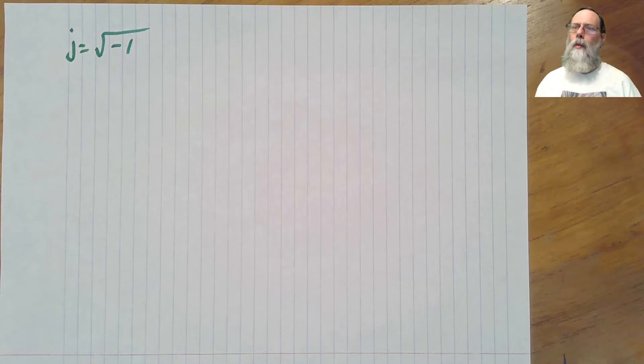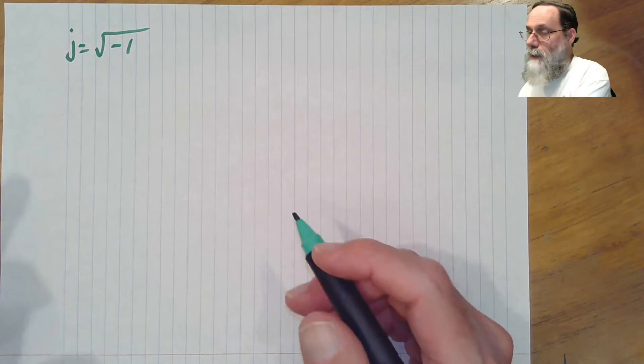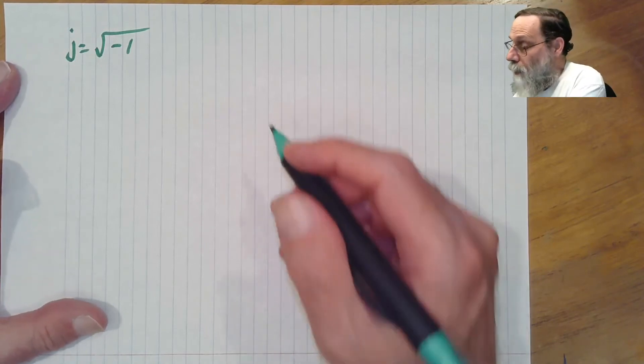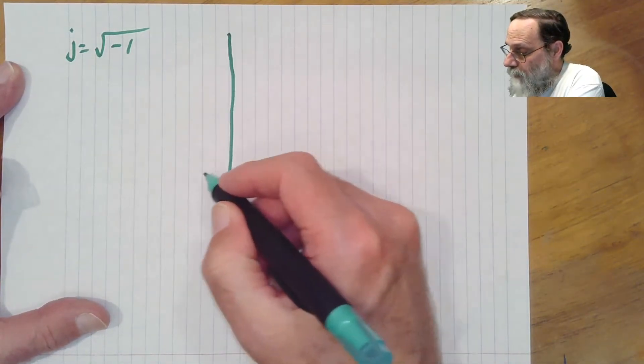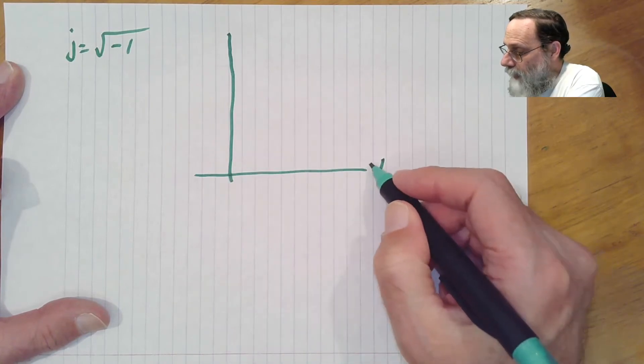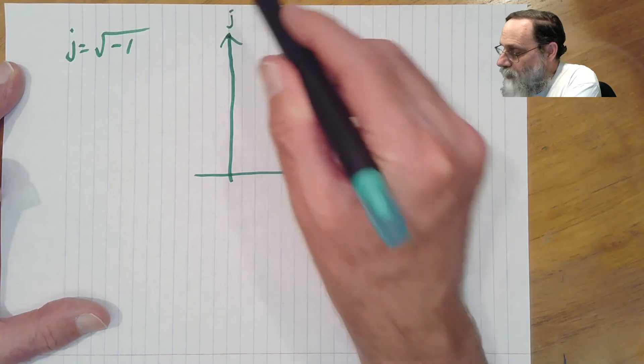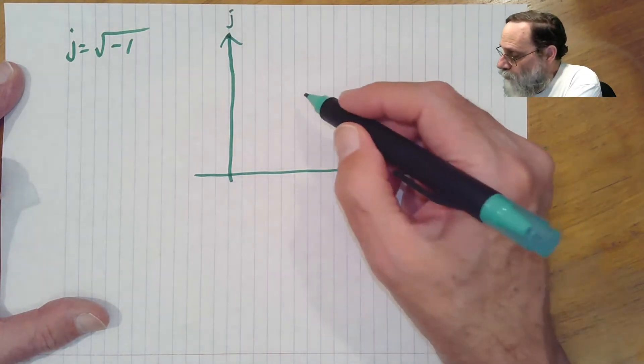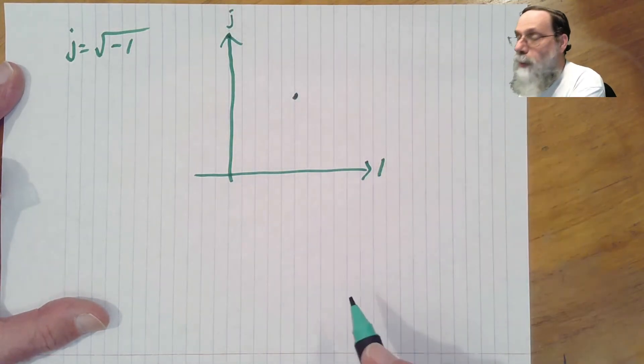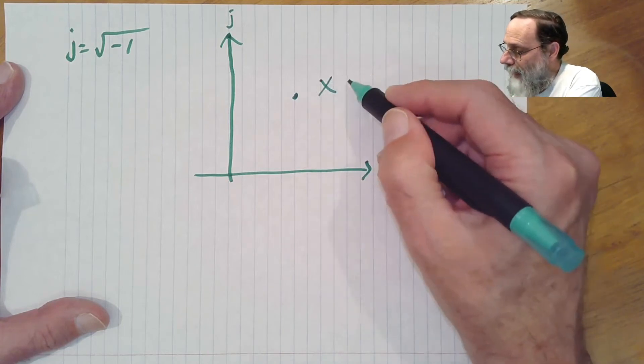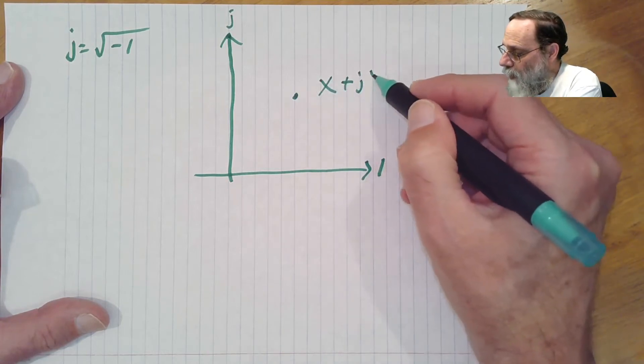What do we do when we do complex numbers? The first thing is to realize that they're really a way of representing a two-dimensional system of numbers. We've got the one axis, and we've got the j axis. And we can write a point in space here, or on the plane, as x plus j y.